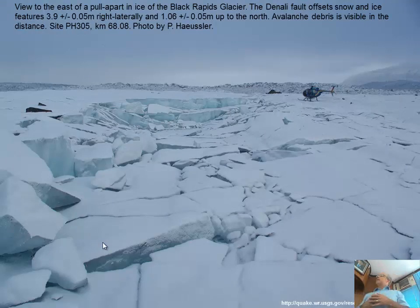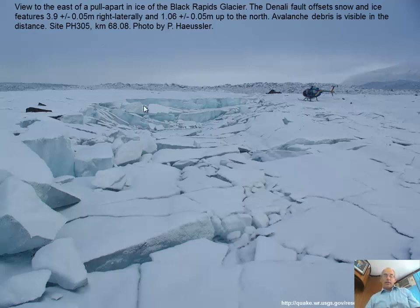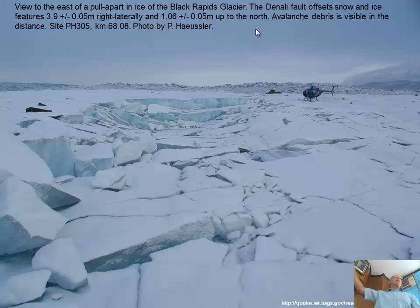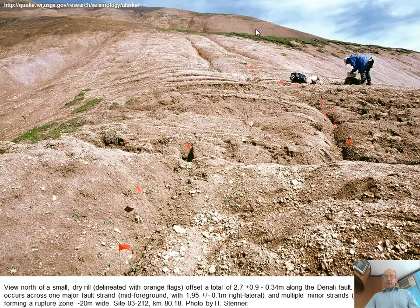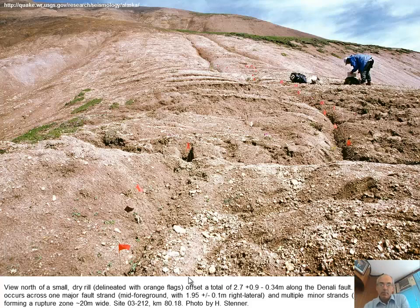Here's another picture of fracturing on the ice — this is a pull-apart. One important lesson: these ruptures aren't perfectly planar. The rupture comes in on the left, steps over to the right, and keeps going. It's a right step in a right-lateral fault, which means opening — you can see the subsidence in the step-over. Here at kilometer 80, it's 2.7 ± 0.9 meters — asymmetric uncertainty on the two sides.